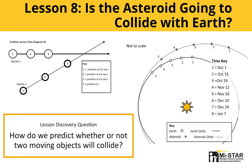In Lesson 8, the last middle lesson, students examine a variety of position versus time diagrams to learn about making predictions as to where a moving object will be at some future time. For the connect phase, students use a position versus time diagram to make a prediction about whether the asteroid and the Earth will collide.